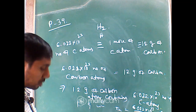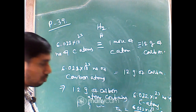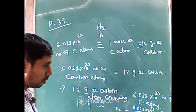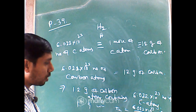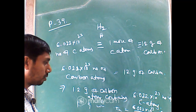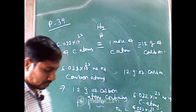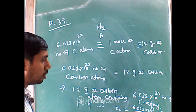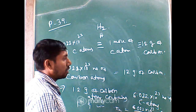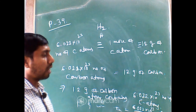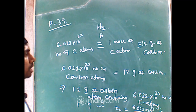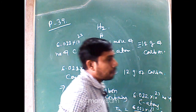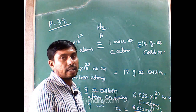The generalization for 1 mole of any particle — whether atoms, molecules, or ions — is that 6.022 × 10²³ number of that particle equals one mole, and the corresponding mass is the relative mass of those particles expressed in grams. When it is for atoms, we mention the number of atoms; if it is for molecules, we mention the number of molecules.